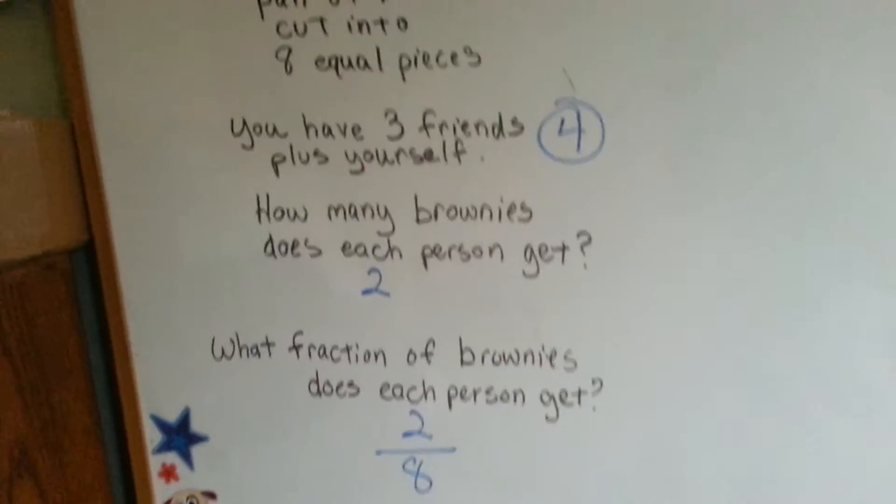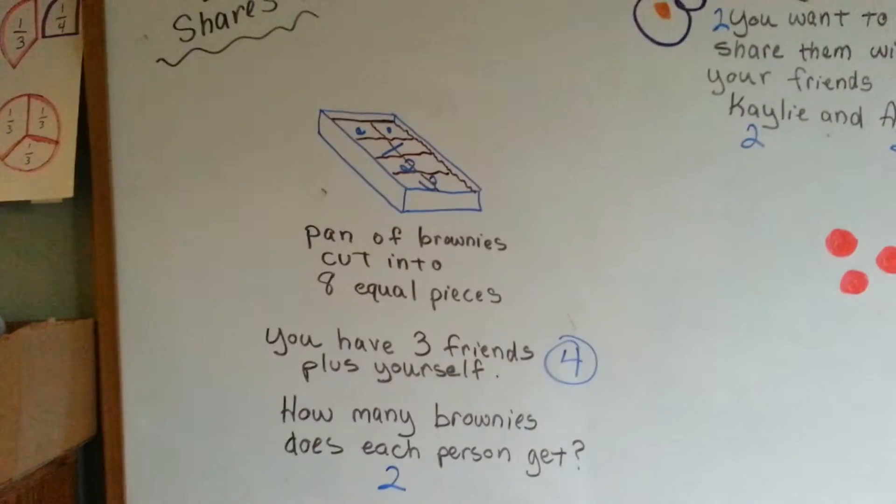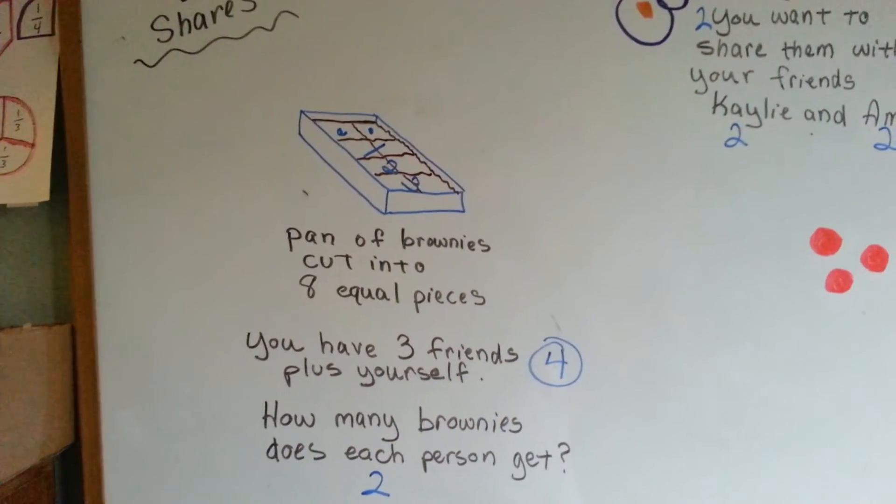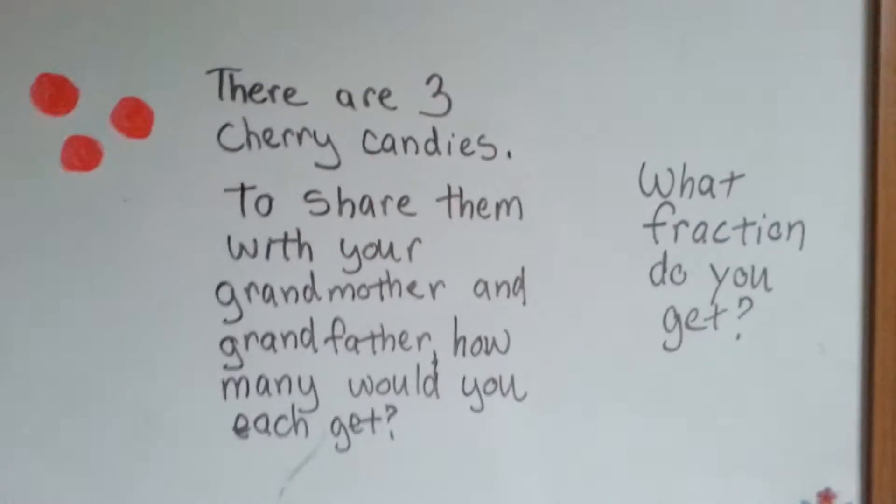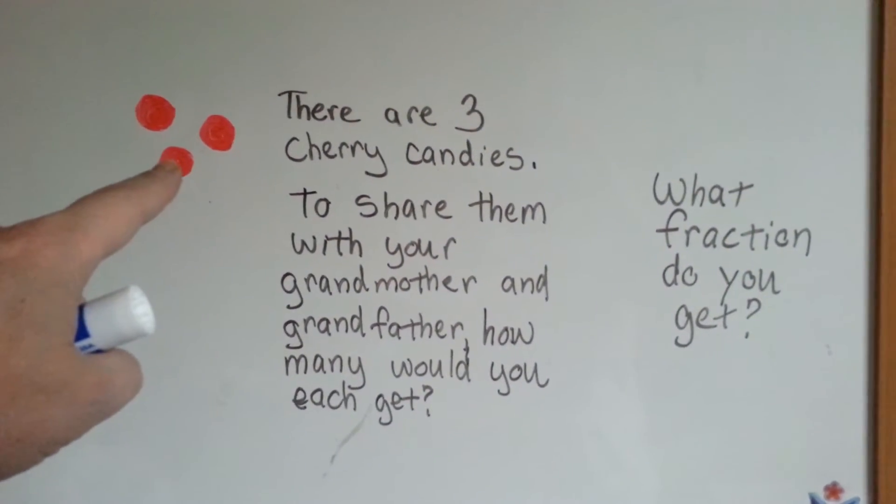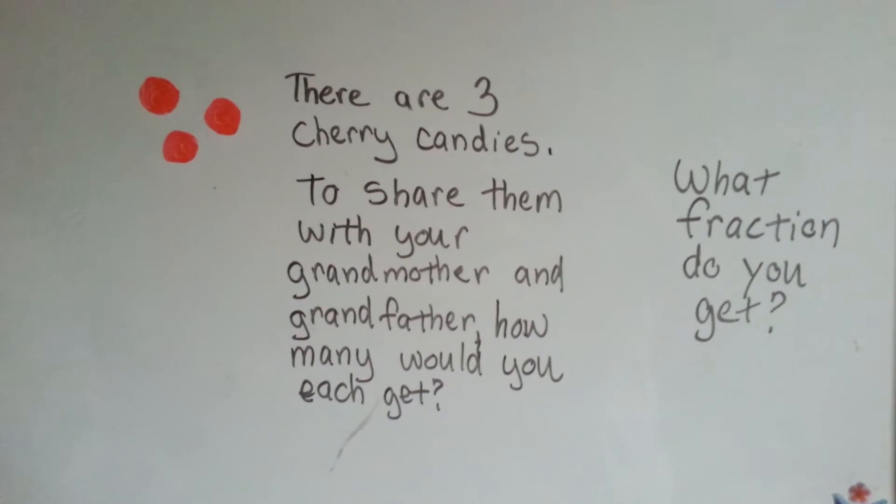You each got two of the eight brownies. So two eighths. You got two eighths of the pan of brownies. See that? Let's look at this one.